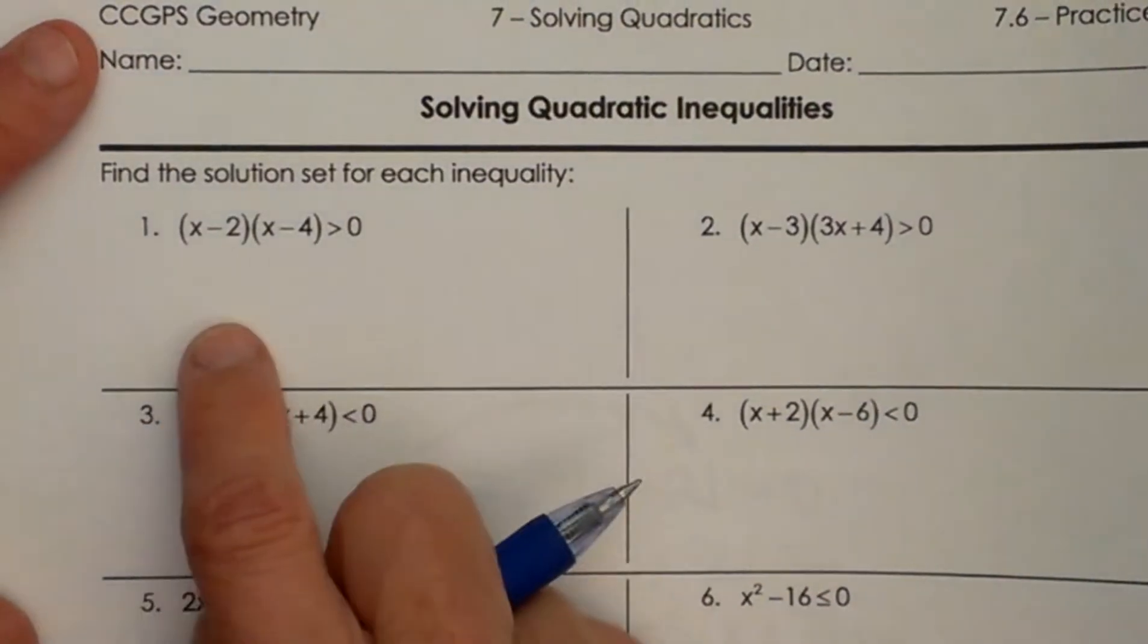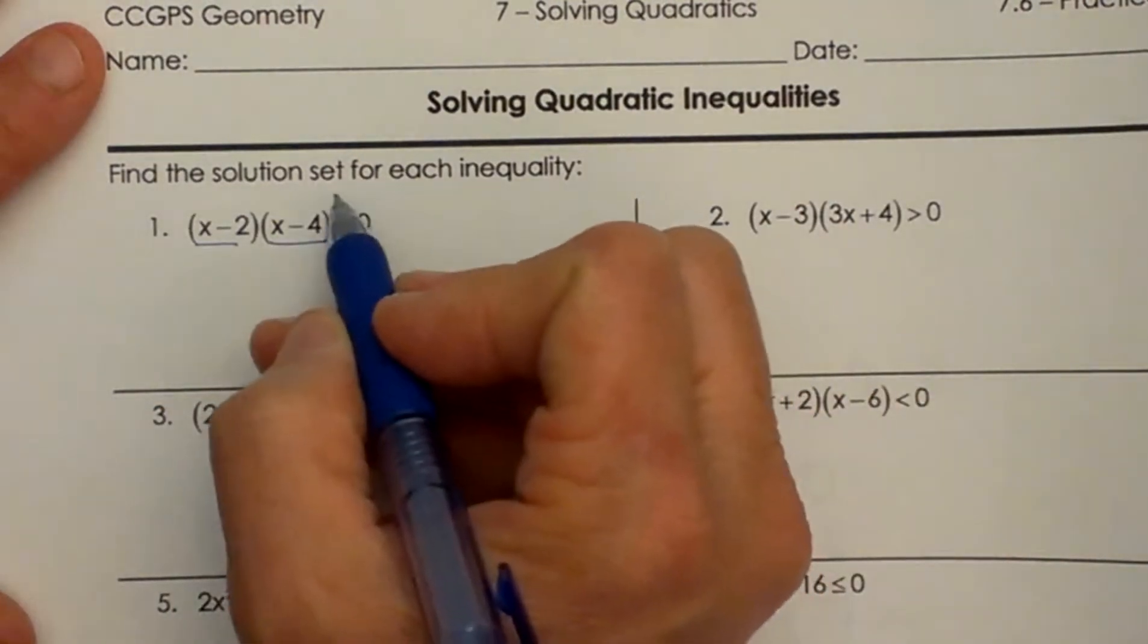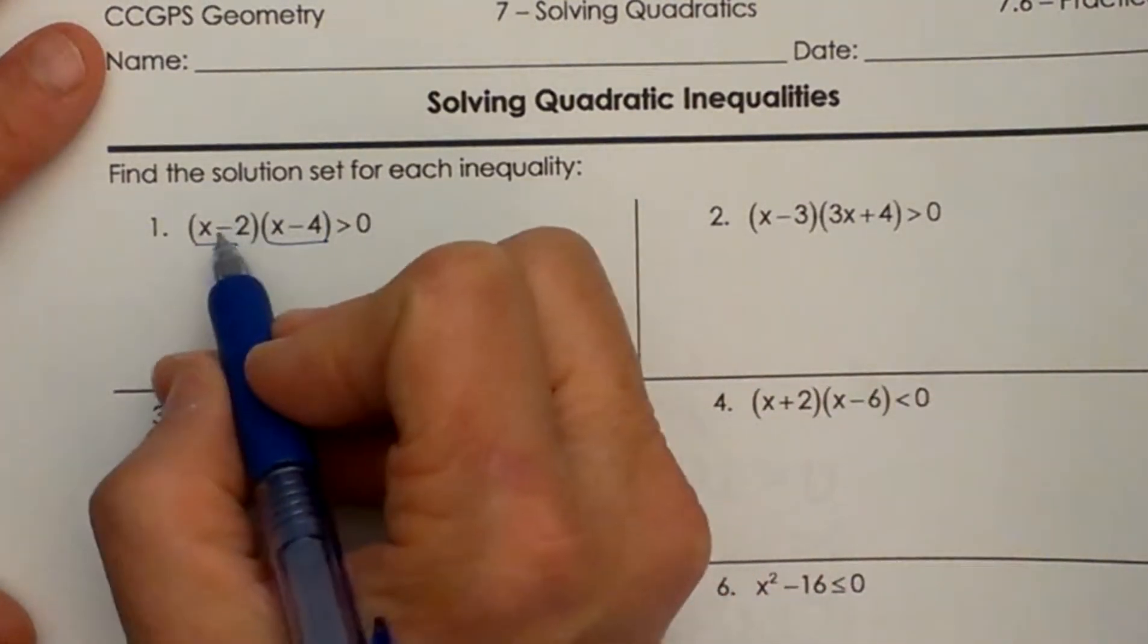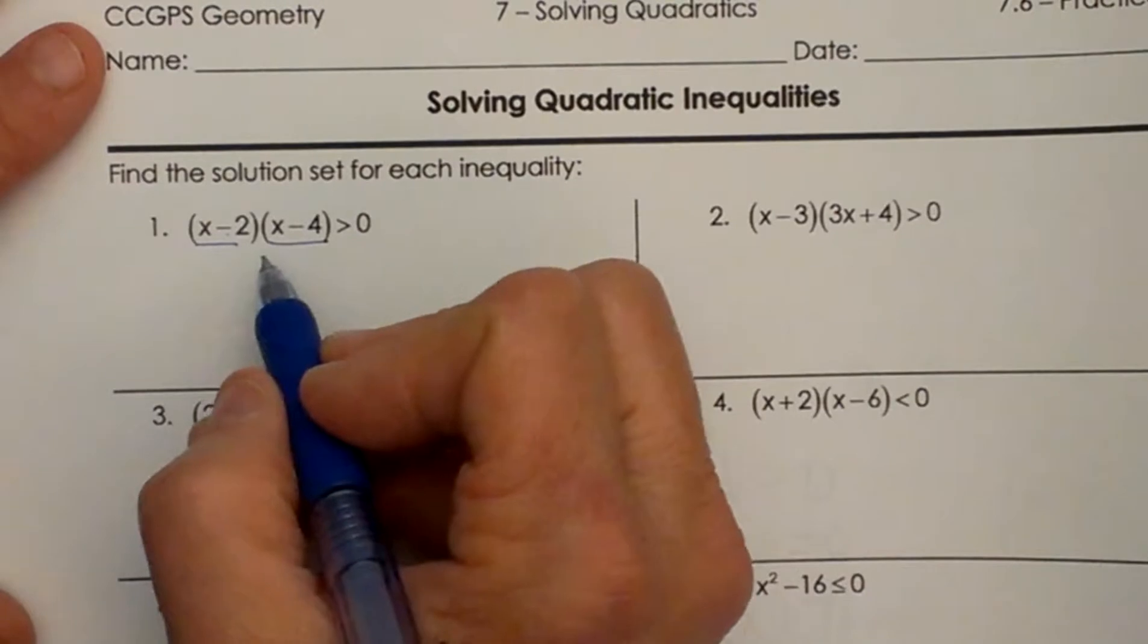So this one is actually already factored. So I already have my factors x minus 2 and x minus 4 is greater than 0. So I have to find out where the region is where I multiply these together and I get a value greater than 0.